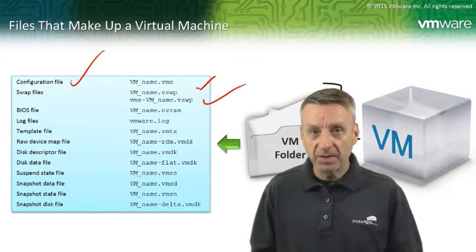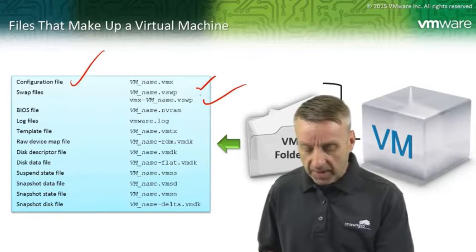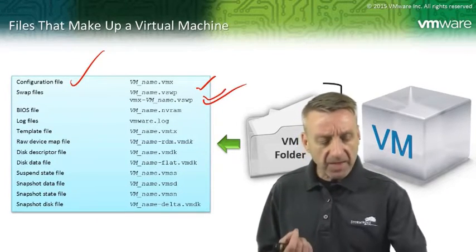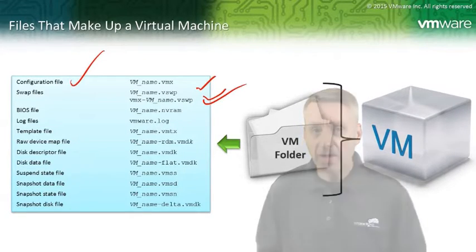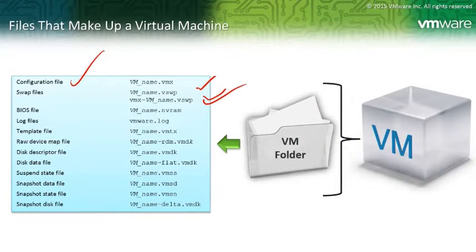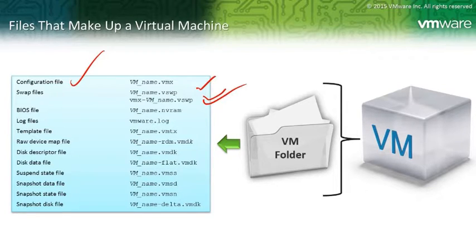The vswap file is there during times of contention. There's also the VMX.vswap file for memory overhead — every virtual machine has memory overhead that varies based on the configuration and size of the VM. There's also an NVRAM file for the BIOS of the virtual machine, and several log files.